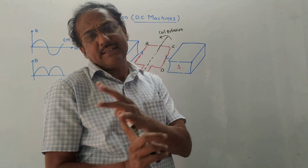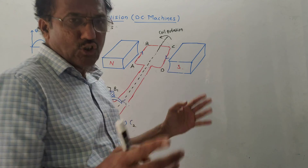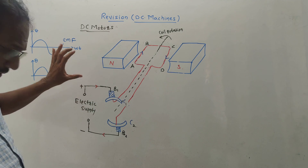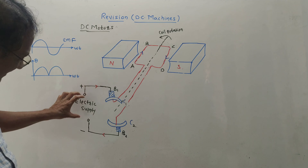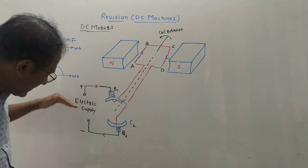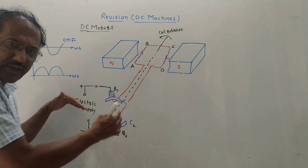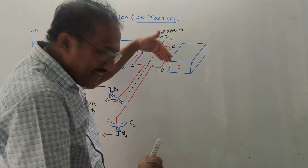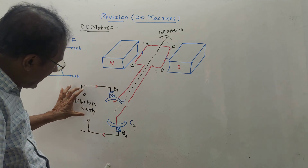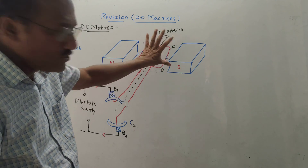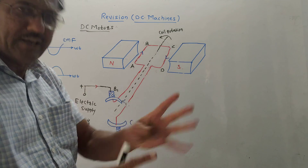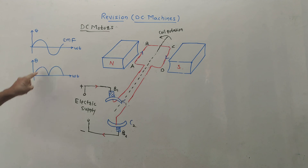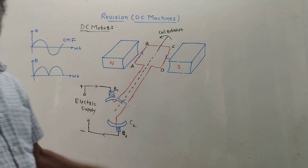The same question can be asked: what is the function of commutator in DC motor? The function of commutator is to accept the static electric supply — this electric supply is not rotating — and convert it into mechanical motion. Second function remains the same as that of DC generator: alternating EMF is changed into unidirectional EMF.